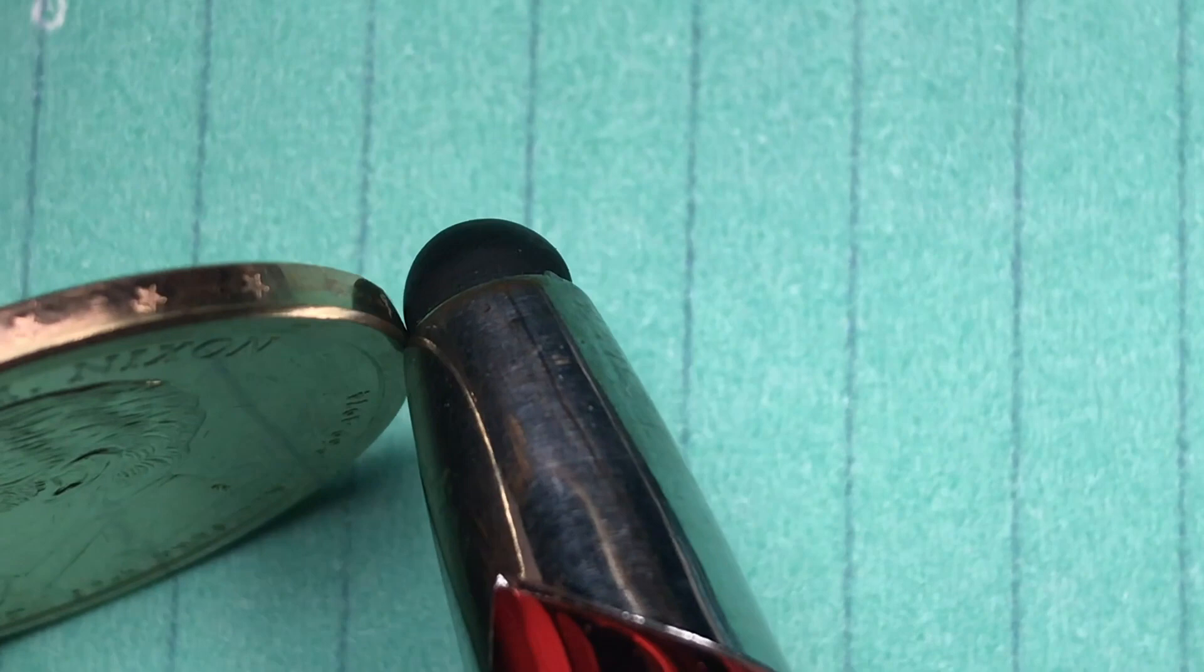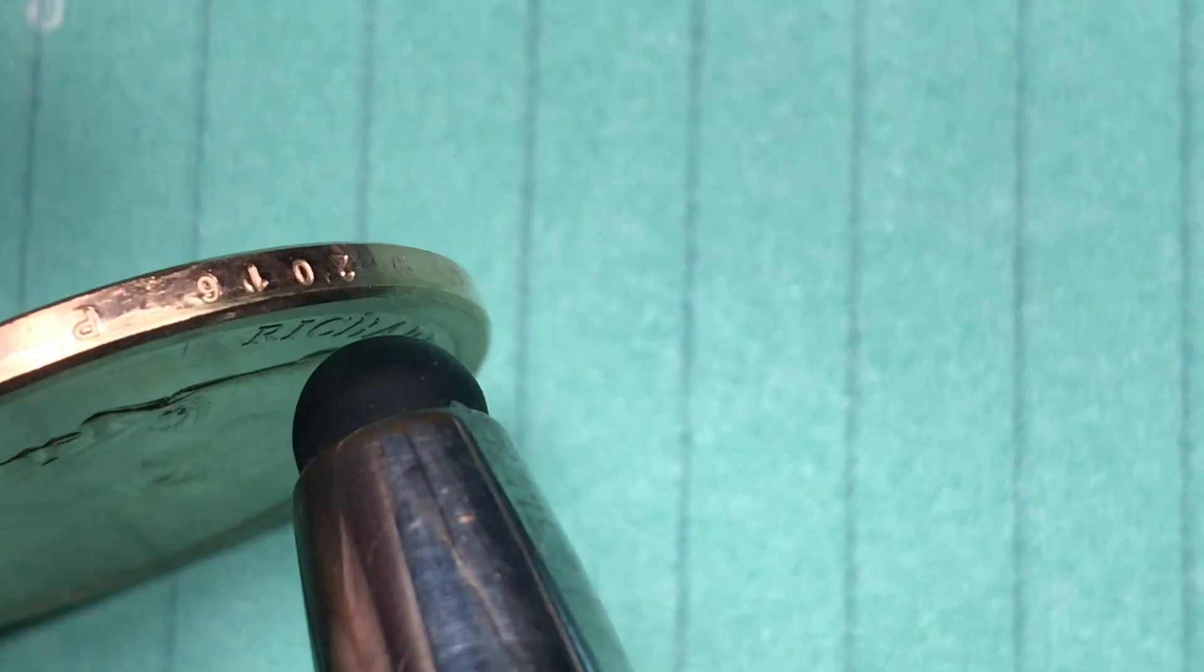So you actually have to tip it up like this, and when you tip it up like this you see there's a bunch of stars there and then you see there's some numbers here, 2016 and a P.